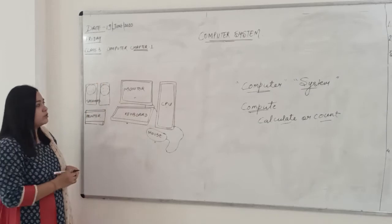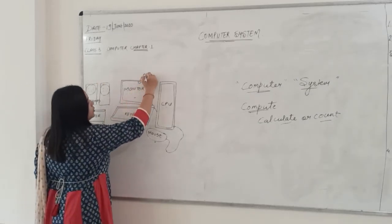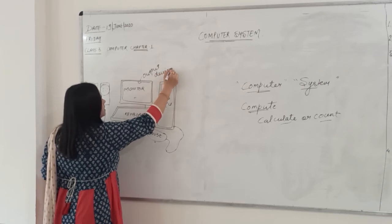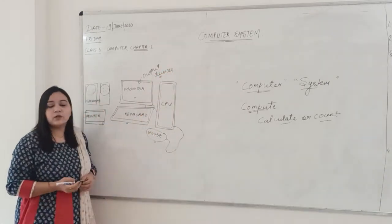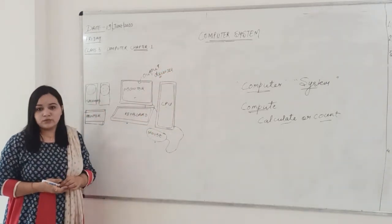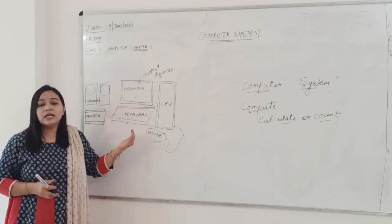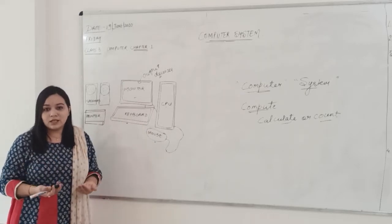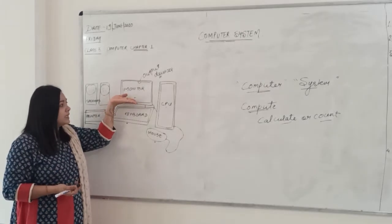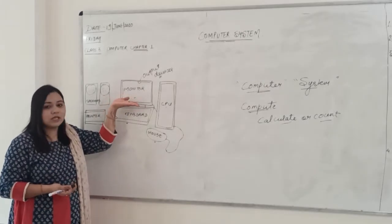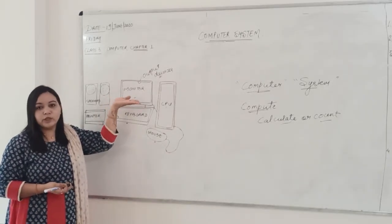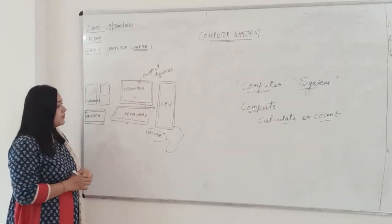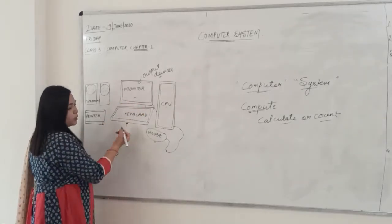The monitor is also known as an output device. In your previous class you might have studied what an output device is — it is a device that shows you the output or result. You can see your results and outputs on the monitor; it displays everything for you. So the monitor is an output device.